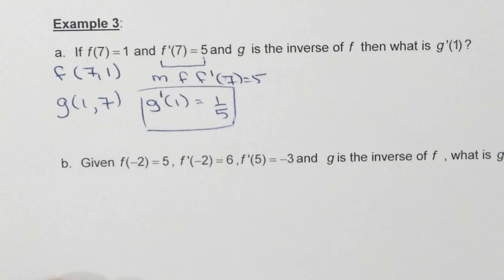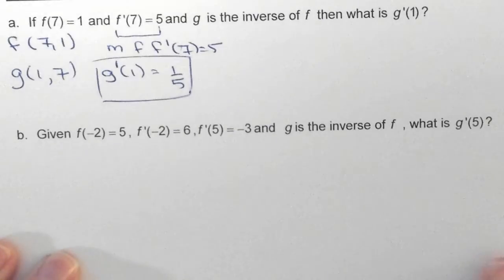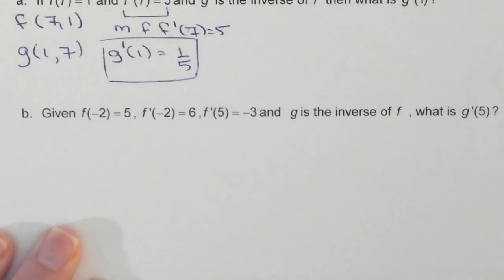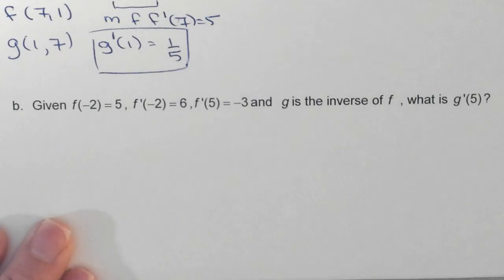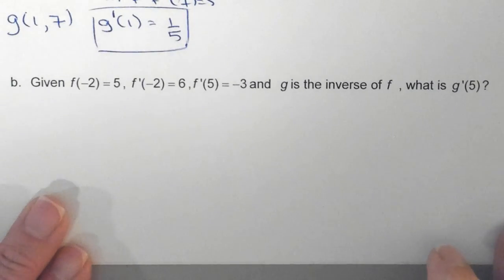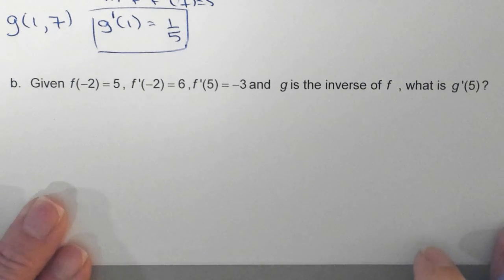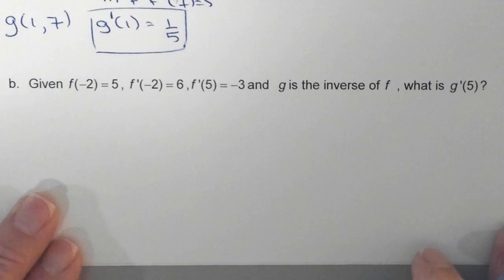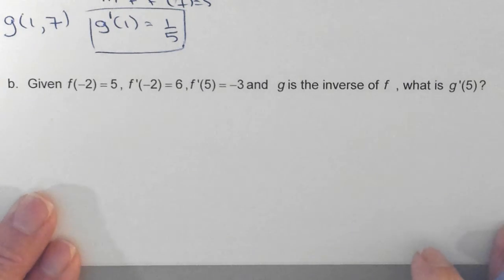As you know, on certain tests like the SATs, ACTs, PSATs, APs, whatever - you are sometimes given in the problem miscellaneous information. It is your job when you are reading these problems to pull out the information that you need, and I'm giving you an example right here. So it says given f of negative 2 is equal to 5, you have f prime of negative 2 is equal to 6, and f prime of 5 is equal to negative 3, g is the inverse of f, what is g prime of 5?